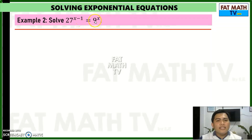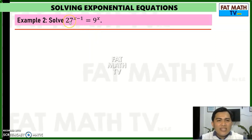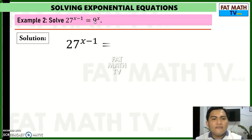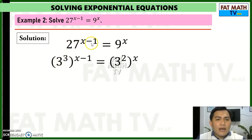Another example: solve 27 raised to (x minus 1) equals 9 raised to x. We need to identify that 27 and 9 are powers of the same number — they are powers of 3. 27 is 3 cubed and 9 is 3 squared. So we write 27 as 3 cubed, copying (x minus 1), and 9 as 3 squared, copying x.